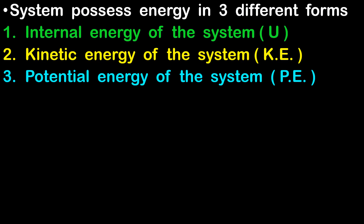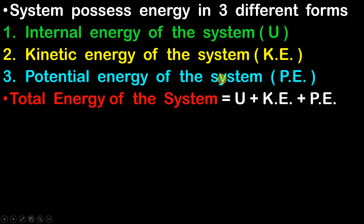It is not necessary that the energy will be distributed in all three forms. It can be present in only one form, in any two forms, or in all three forms depending on the conditions. So if the energy of the system is distributed in these three forms, then the total energy of the system is nothing but the internal energy plus kinetic energy plus potential energy of the system.